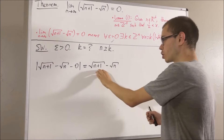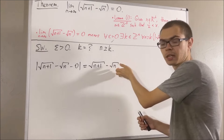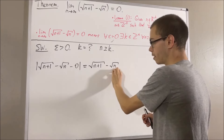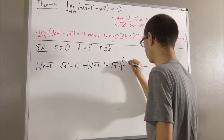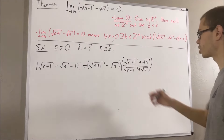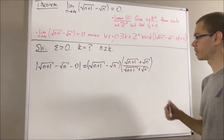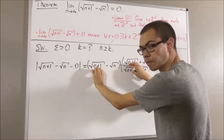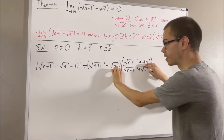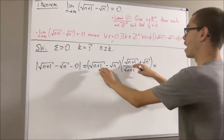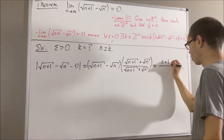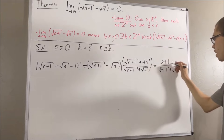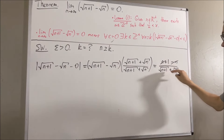A trick you can try when dealing with square roots is to multiply by the conjugate. That is, we're going to multiply this by square root of n plus 1 plus square root of n over square root of n plus 1 plus square root of n. This trick tends to be pretty powerful when dealing with square roots. We're doing this expression times this expression, so that leaves us with square root of n plus 1 squared minus square root of n squared in the numerator — that's n plus 1 minus n — and in the denominator, square root of n plus 1 plus square root of n. The n's cancel out, leaving us with 1 over square root of n plus 1 plus square root of n.